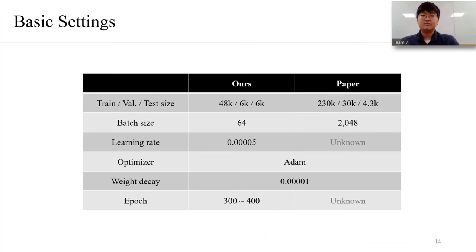These are the basic settings for training AVENet. We used the subset of the dataset that authors used. We used batch size of 64 because of GPU memory limitation. Authors used 2048 as the batch size by using 8 GPUs. Learning rate and epoch is not stated in the paper, so we found our own.